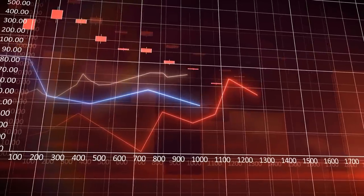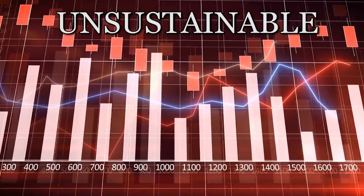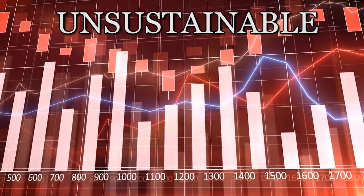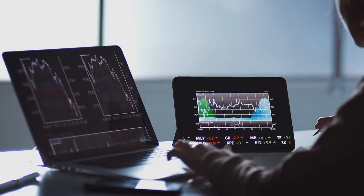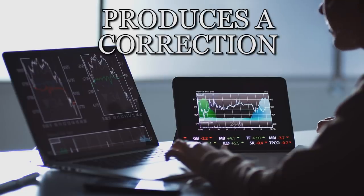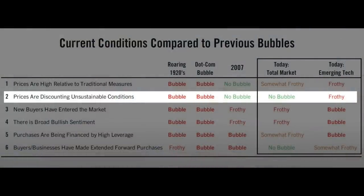The second is prices are discounting unsustainable conditions. So unsustainable starts to be part of this picture of a bubble. Unsustainable means that by the nature of the buying, whoever is doing the buying and how of that supply demand, that means that that won't be sustained and that produces a correction or prices going down. And as you can see right now, in terms of supply and demand, the way investors are buying, it's in a relatively sustainable way in terms of the overall market. When we look at emerging tech, however, that's when we have a bit of a problem. That's a frothy amount of unsustainable investing going on there.